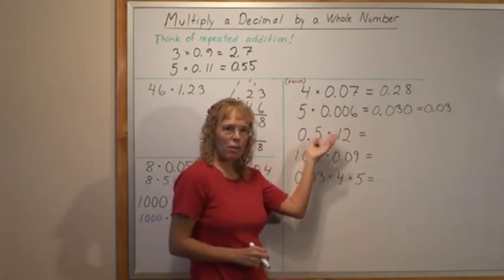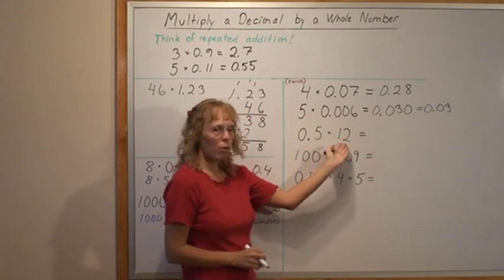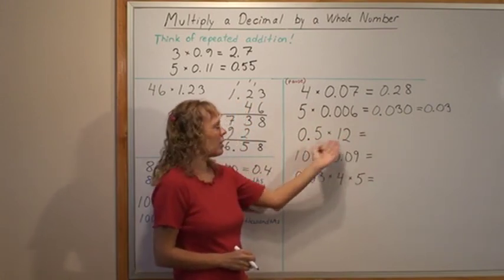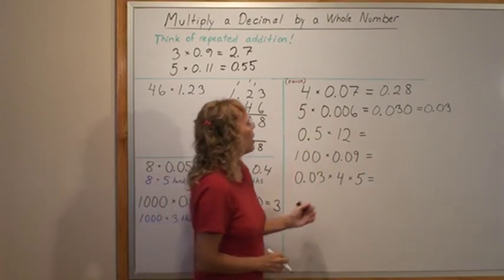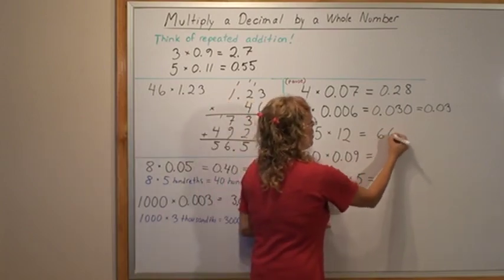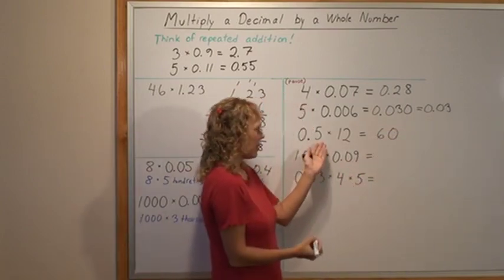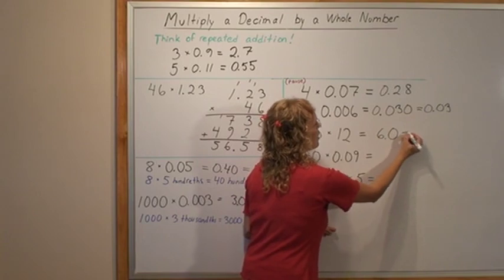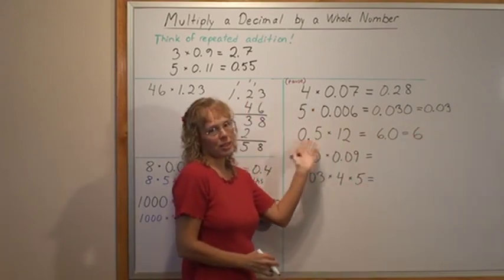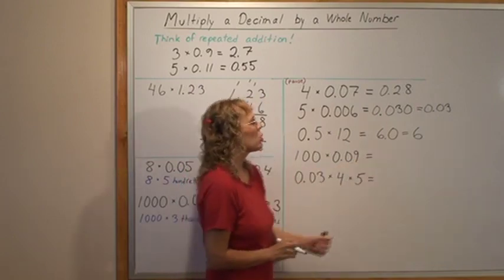Here the same principle works even though the numbers are reversed. We have a whole number and a decimal so this is like 12 copies of half. 12 times half. And 12 times 5 would be 60. But we know the answer has to have tenths so it's 6.0. Of course if you think of 12 copies of half it's pretty easy to do in your head anyway, that it has to be 6 whole.